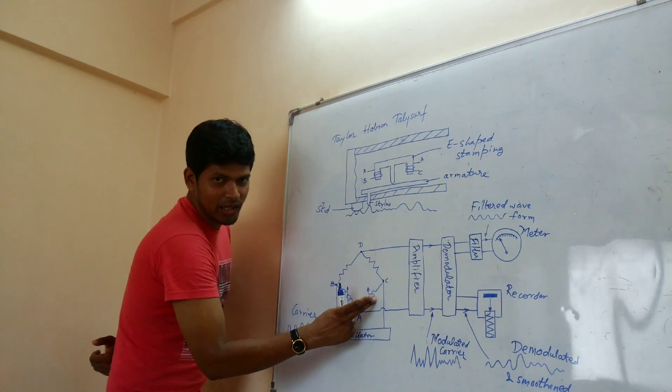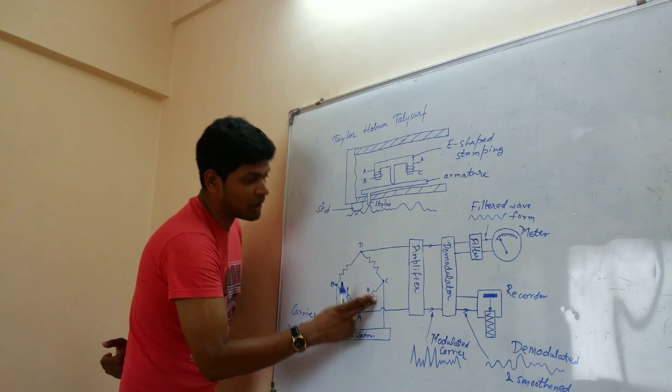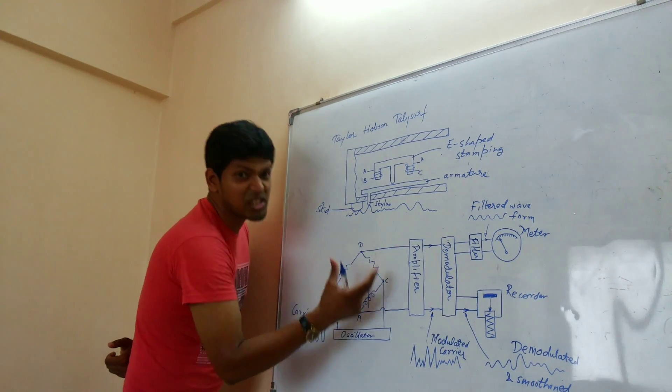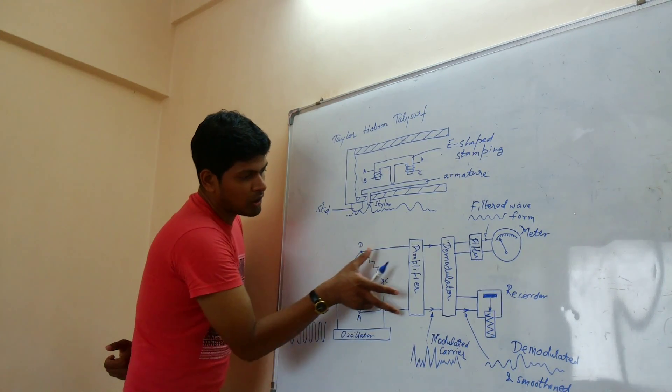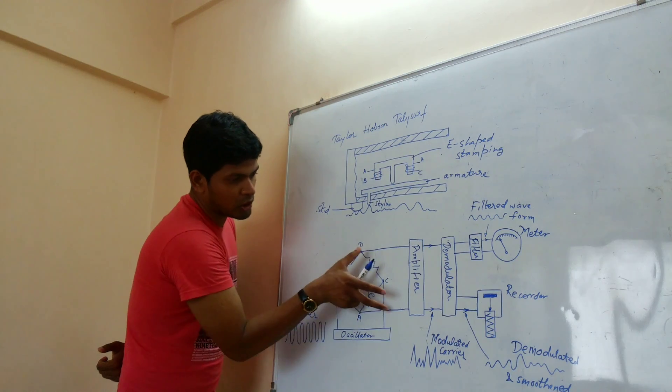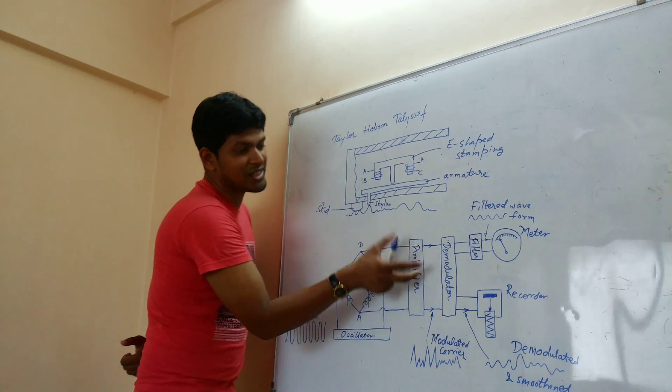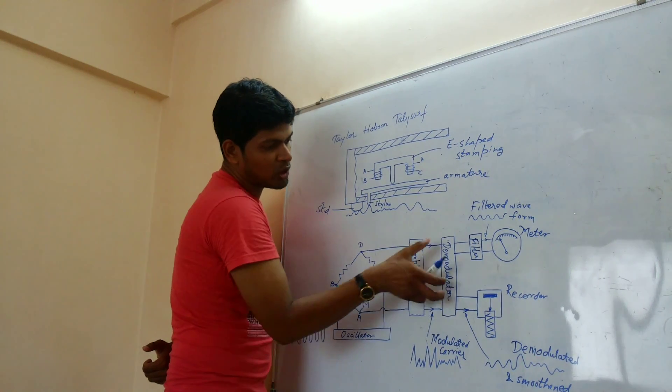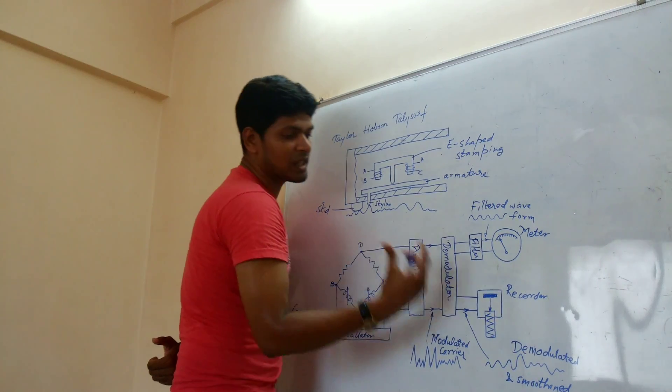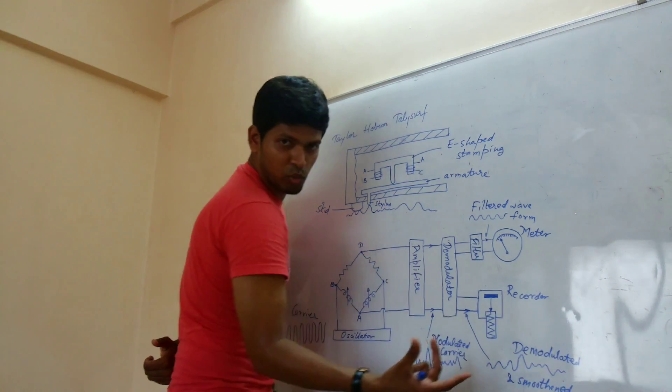So these coils where the AC current gets changed or varied along with the resistors gets this carrier converted to modulated carrier. Here it is amplified. And then it goes to the demodulator where the signal you will have now modulated and smoothened.